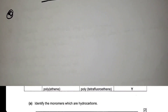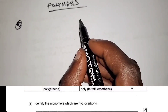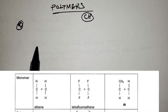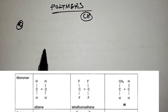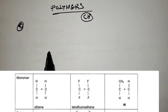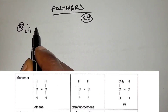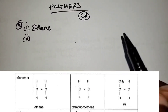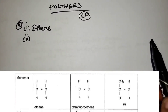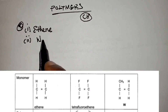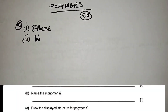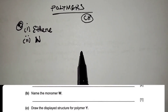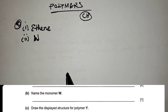Hydrocarbons are compounds made up of carbon and hydrogen only. When you look at the monomer ethene, there is carbon and hydrogen only, so ethene is a hydrocarbon. Tetrafluoroethene contains fluorine, so it is not a hydrocarbon. For monomer W, there is only carbon and hydrogen, so W is also a hydrocarbon.